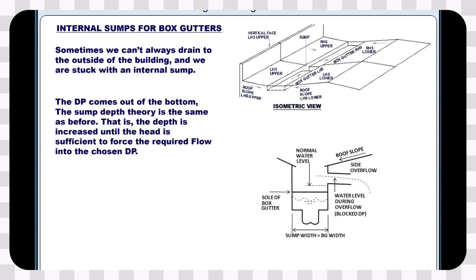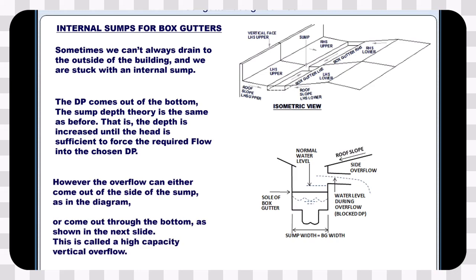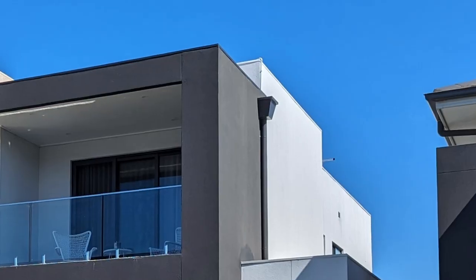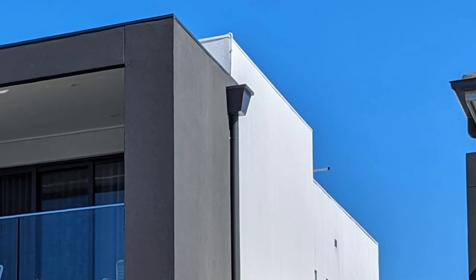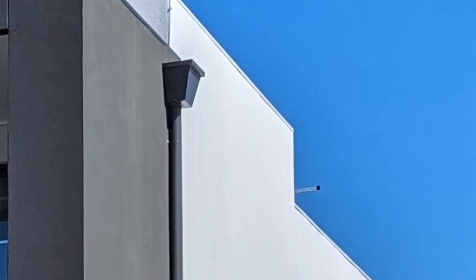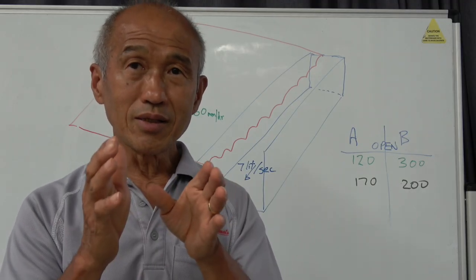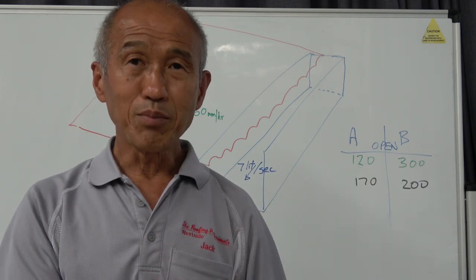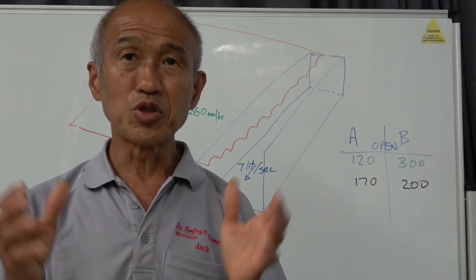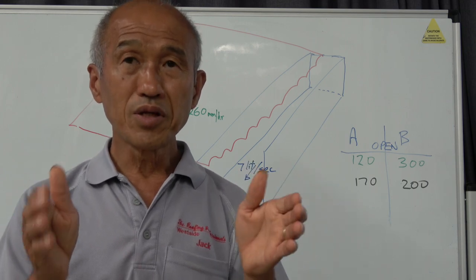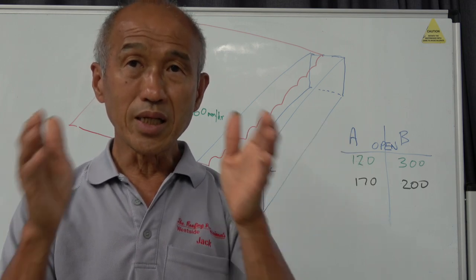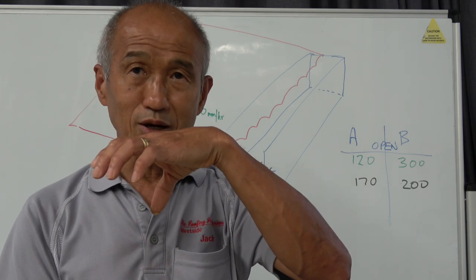A lot of designers don't like the look of a rainwater head on the side of the house that catches all the runoff from a box gutter, so as a result they eliminate the rainwater head and put in internal downpipes to drain the box gutter. Now in theory that box gutter needs to have a sump and then a downpipe.